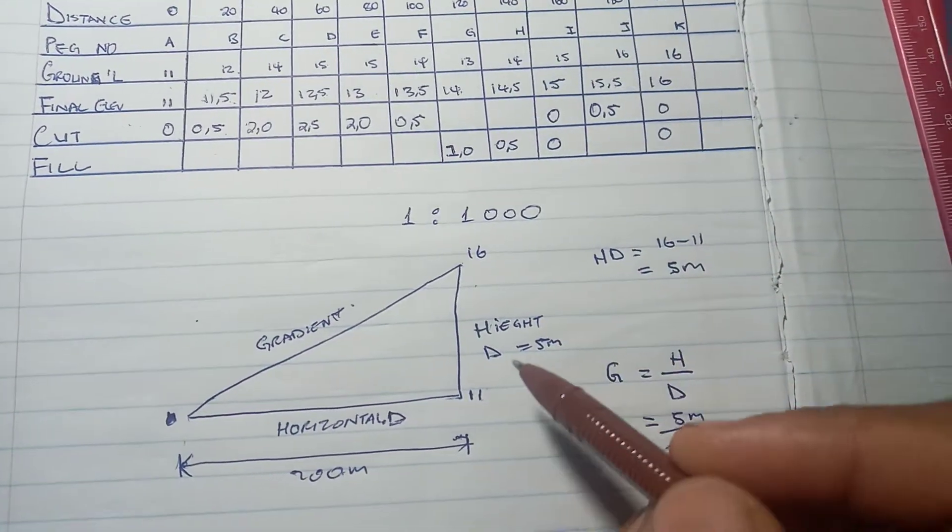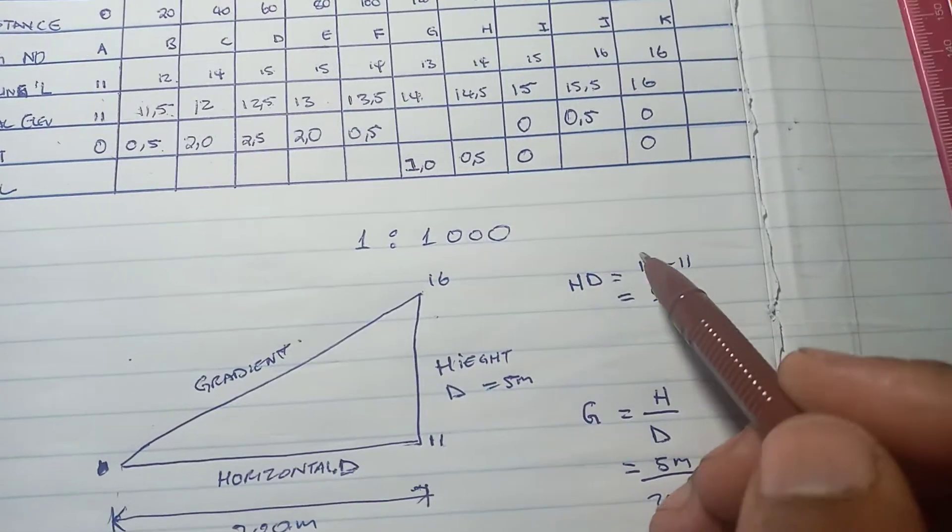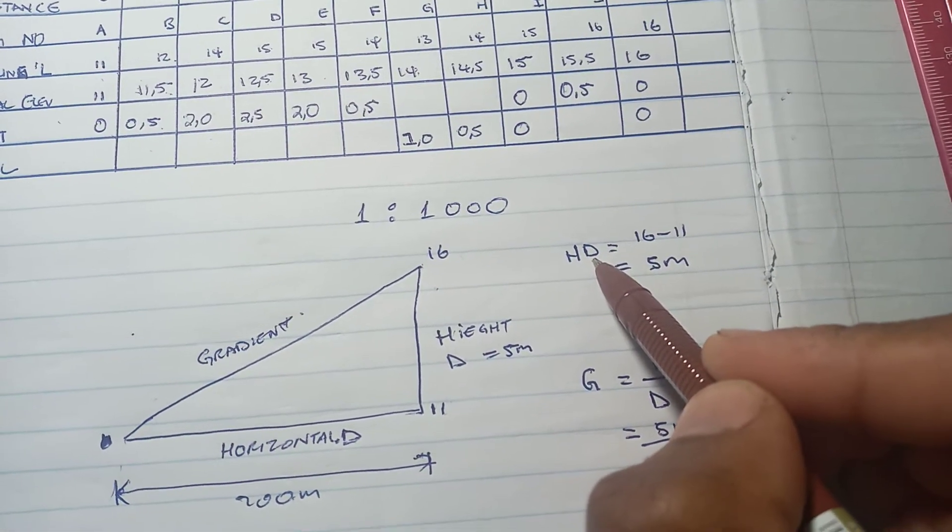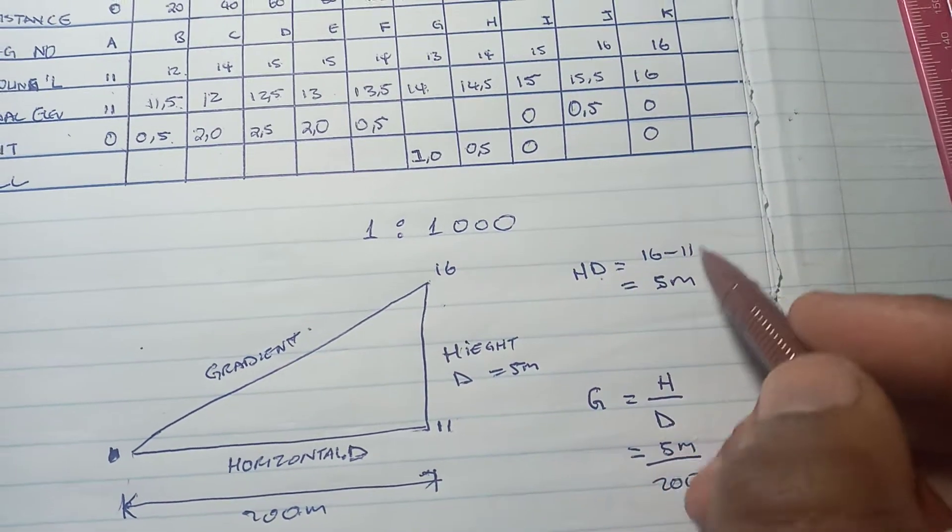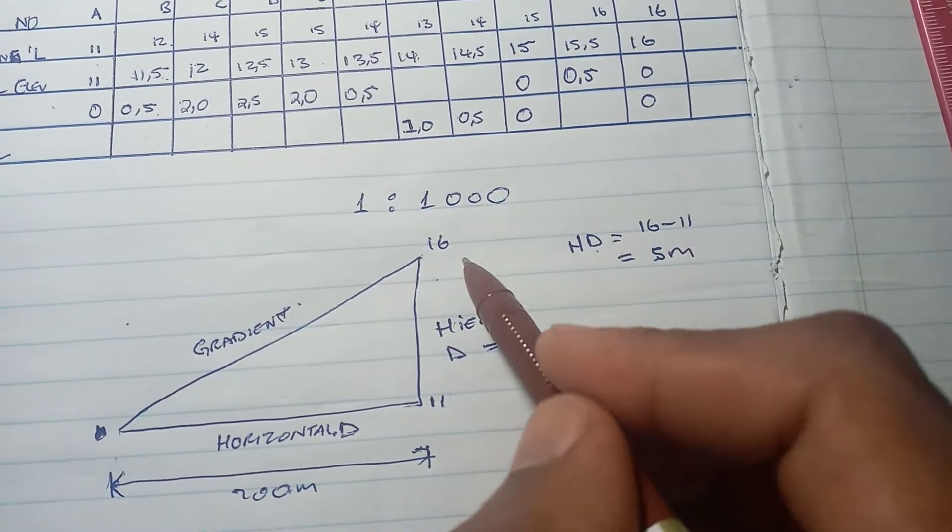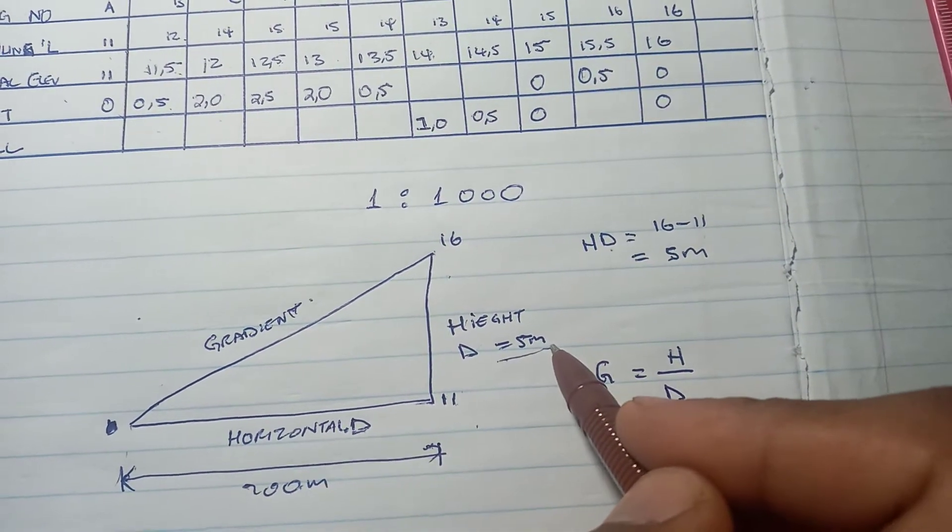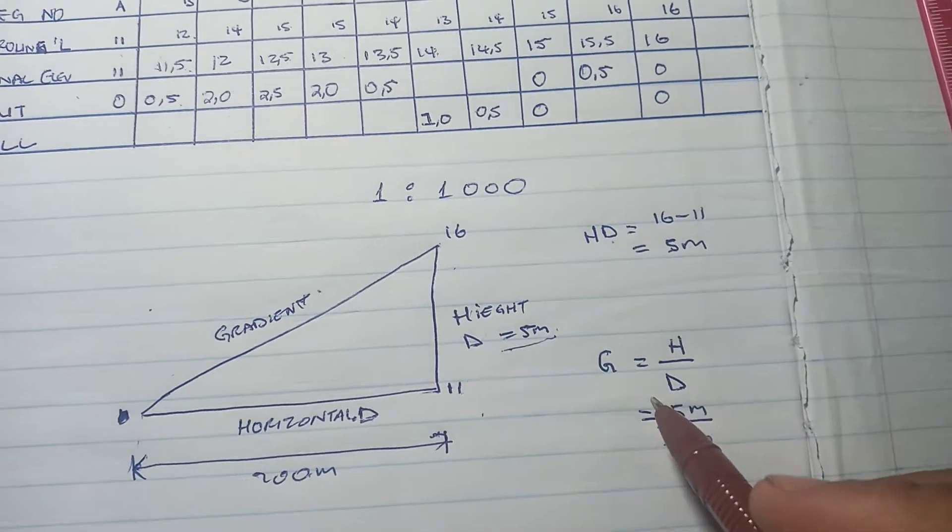In order to get the gradient, we have to find the height difference. So the height difference is 16 minus 11. 16 minus 11 equals 5. So the height difference is 5 meters.